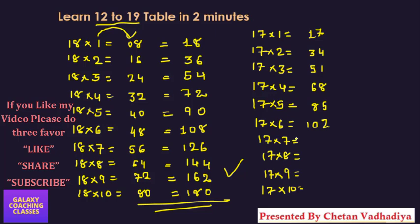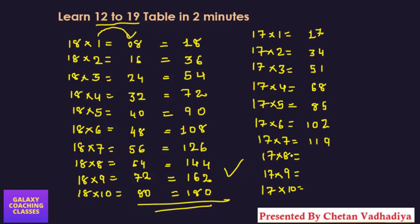7×7=49, 4+7 will give you 11. Now 7×8=56, 5+8 will give you 13. 7×9=63, 3 here, 6+9 will give you 15. And directly 0 here and 17. So this way you can easily remember any table from 12 to 19 by this method.